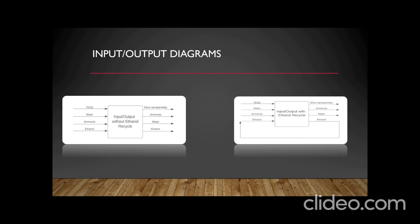The input-output diagram on the right is the Stober process with our added recycle stream. The Stober process is unaffected by the addition of the recycle stream as long as the ammonia is completely removed before recycling the ethanol back into the process. When doing our economic analysis, we can simply focus on the amount of ethanol recycled, which gives us the dollar amount saved by adding the recycle stream.